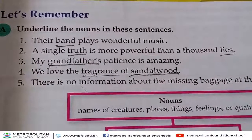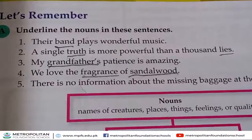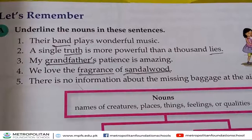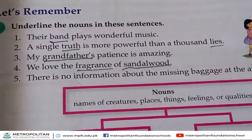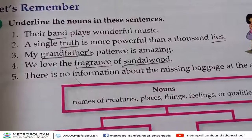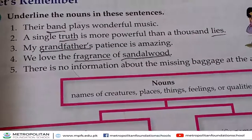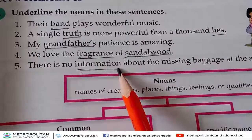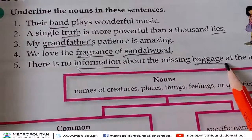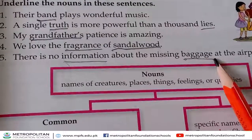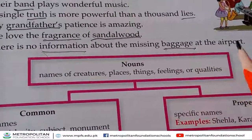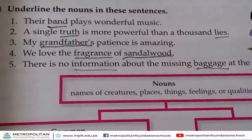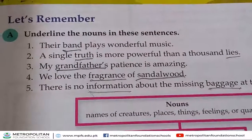And the last one: 'There is no information about the missing baggage at the airport.' In this sentence we have three nouns: information, baggage, and airport. So Exercise A is completed.